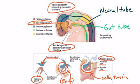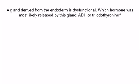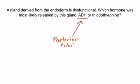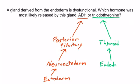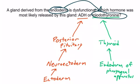Let's do a quick question to apply what you've learned. A gland derived from endoderm is dysfunctional — which hormone was most likely released by this gland: ADH or triiodothyronine? ADH is released from the posterior pituitary, derived from neuroectoderm, which is derived from ectoderm. Triiodothyronine, or T3, is released from the thyroid gland, whose cells come from endoderm in the pharyngeal apparatus. So the gland derived from endoderm most likely released triiodothyronine. That concludes this section.